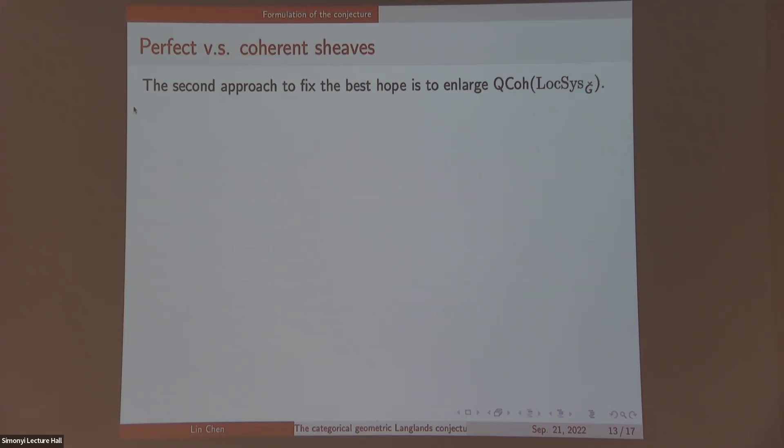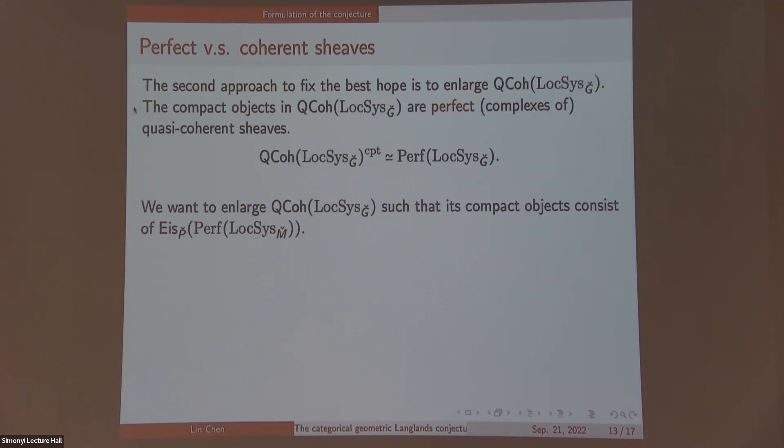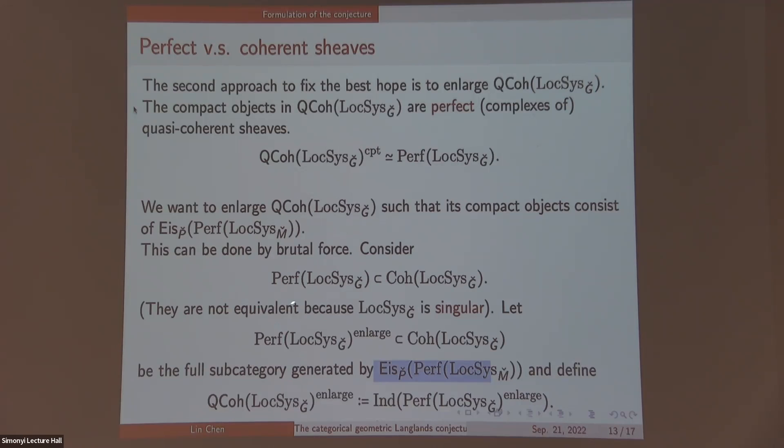The other strategy would be to enlarge Qcoh. This can be done by brute force. Recall, I mentioned that the compact objects inside this category are perfect complexes. Now we want to enlarge Qcoh such that the compact objects also contain the Eisenstein series of perfect complex for smaller Levis. We just do it by brute force. Recall, we have this Perf of perfect complex can be embedded into the category of quasi-coherent complexes. But you can just define this enlarged Perf as the category compactly generated by all these objects.